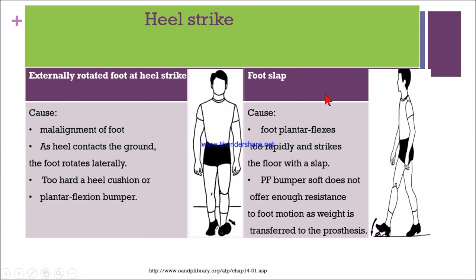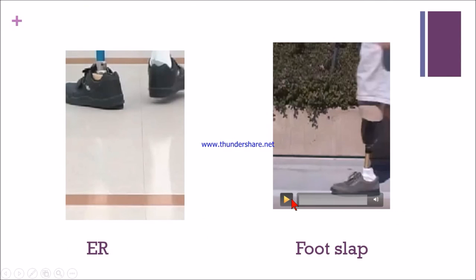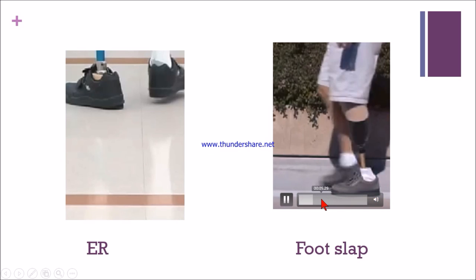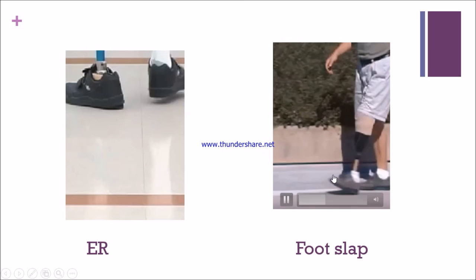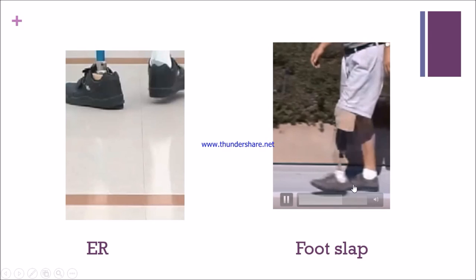Foot slap at heel strike occurs when the foot plantar flexes too rapidly and strikes the floor with an audible slap sound. This happens when the plantar flexion bumper is too soft and does not offer enough resistance, so the weight of the foot is transferred rapidly to the prosthesis. In this video, we can see the foot slapping repeatedly because the plantar flexor bumper is too soft.